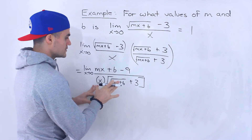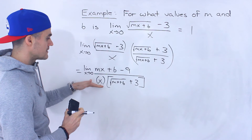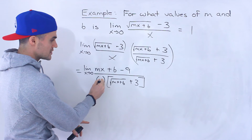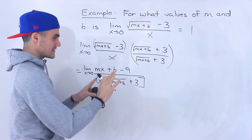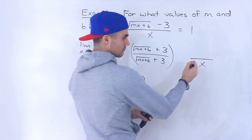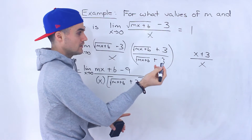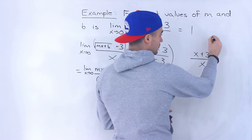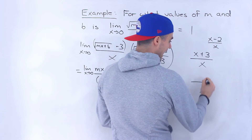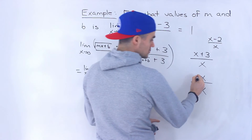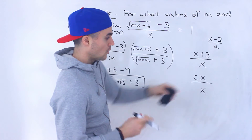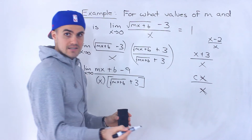So we're at this point. What we need to do is get rid of this x in the denominator. Because this x is by itself, the only way to cancel it is if there's a corresponding x by itself in the numerator. If we end up with something like x plus 3, or x minus 2, we can't cancel those x's. The x only cancels if we have x by itself in the numerator — there can also be a constant attached to it, like 5x or negative 3x.